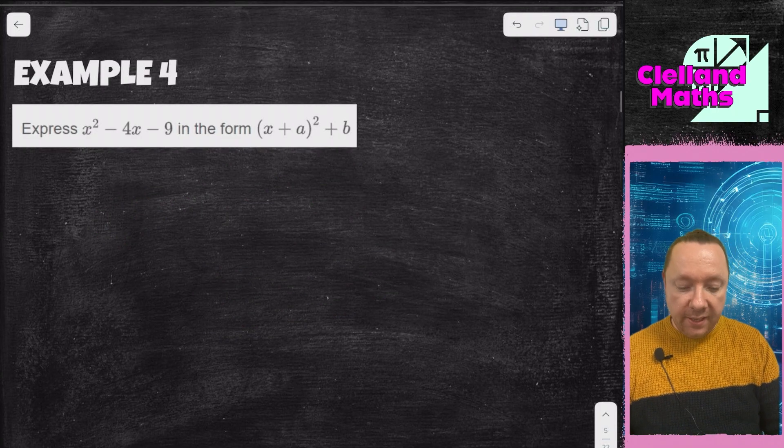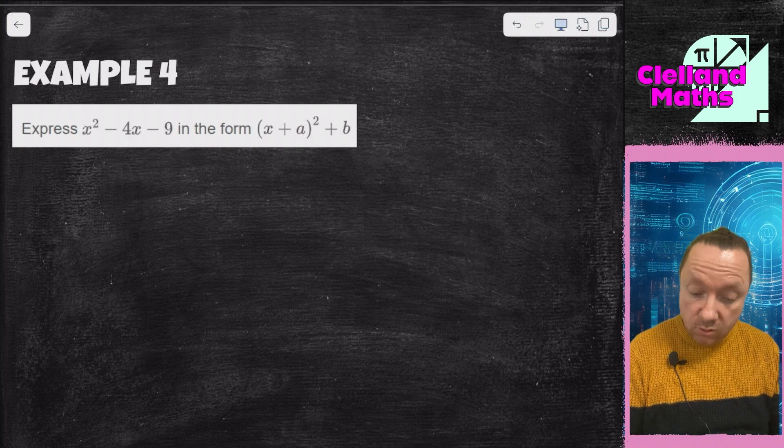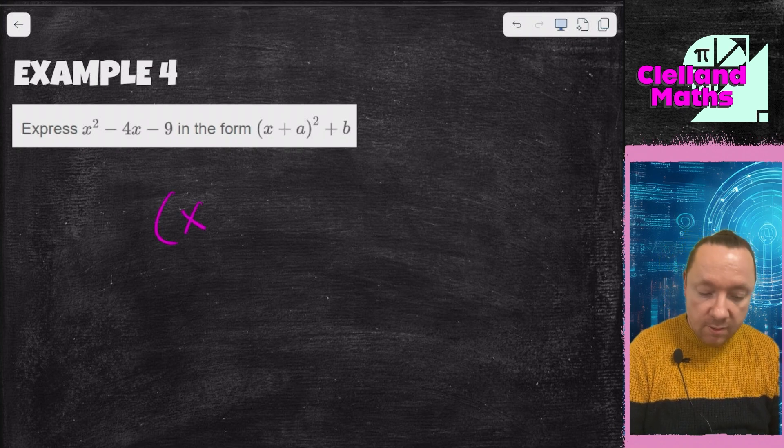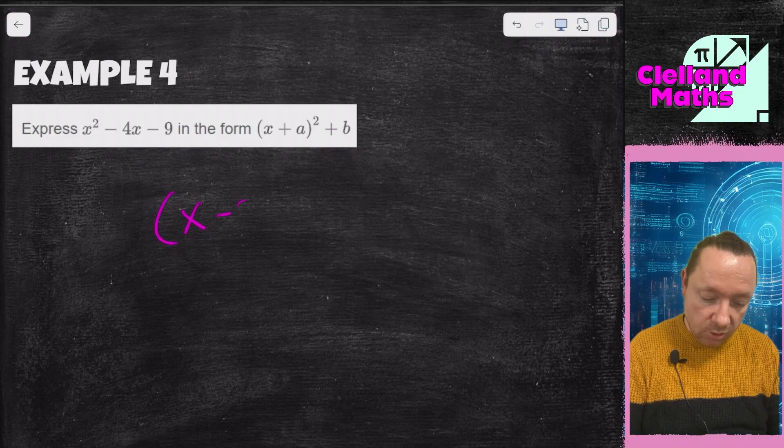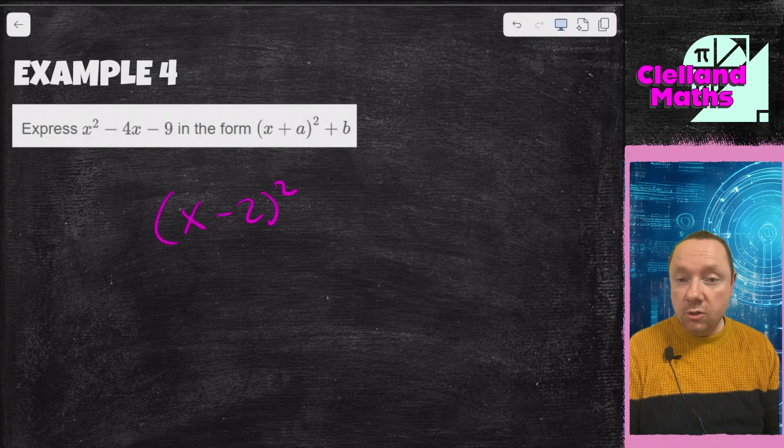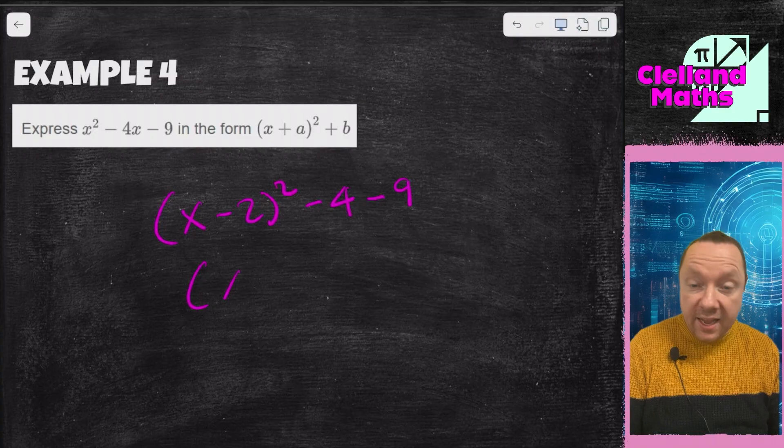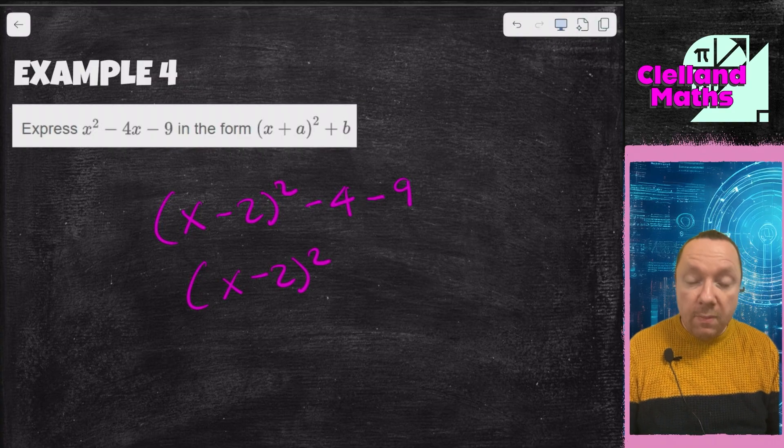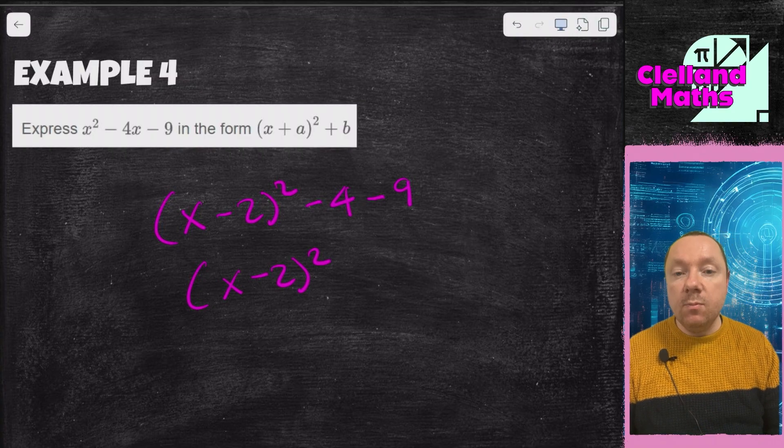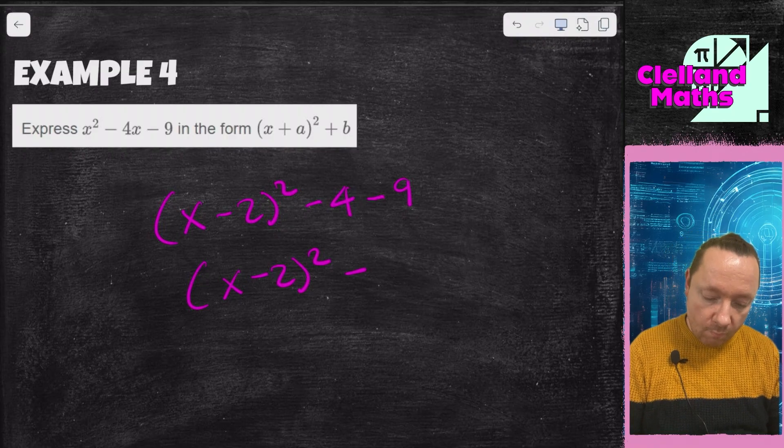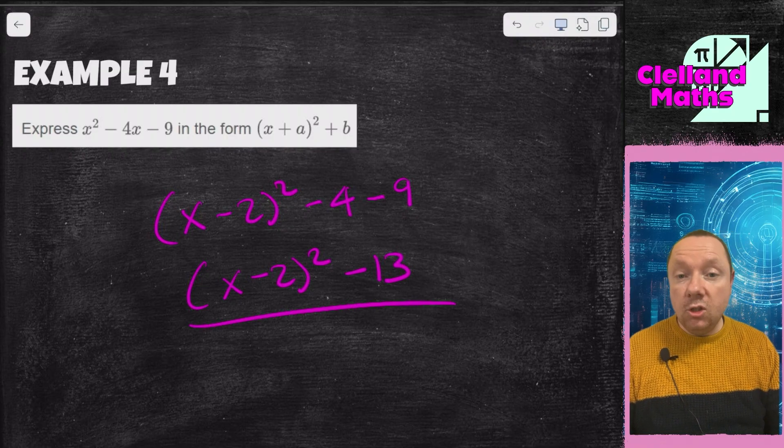x squared minus 4x minus 9 in the form x plus a squared plus b. Same idea. x half of 4 is 2, minus 2 squared. 2 times 2 is 4, so I'm taking away 4, but I've still got minus 9. So a bit of negative number work here. x minus 2 squared minus 4 minus 9 is minus 13. Let's do another one.